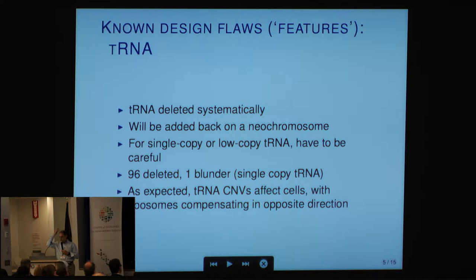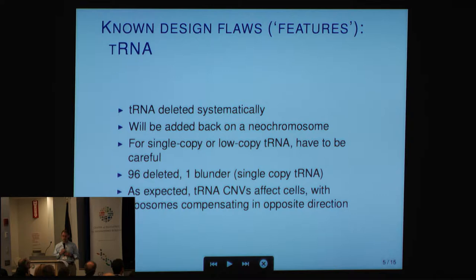There are some known design flaws — maybe features — that are really not design mistakes. One example, if you read the papers, is that there are some issues with changes in ribosome levels. That is really all due to the strategy of taking the tRNAs off of their home locations and putting them on the separate neochromosome that's added back later. During the process, there's a transient where the copy number of a tRNA is different. So if it's too low, more ribosomes — we see that in the strains without the neochromosome. That should all get corrected, so that's not really a design flaw.